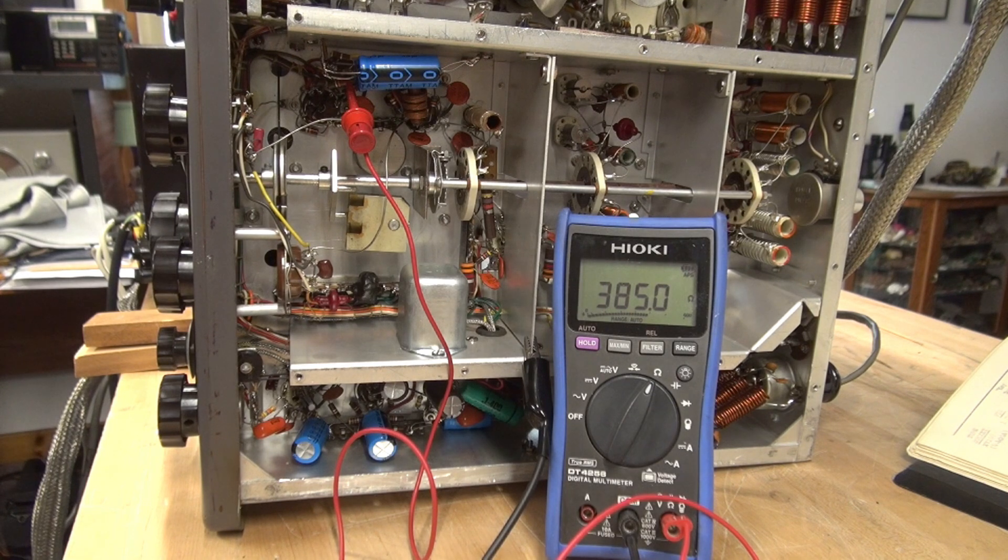I am seeing 385 ohms, and I believe that is why the negative 45 volts is not reaching pin 7. It's being shunted to ground.